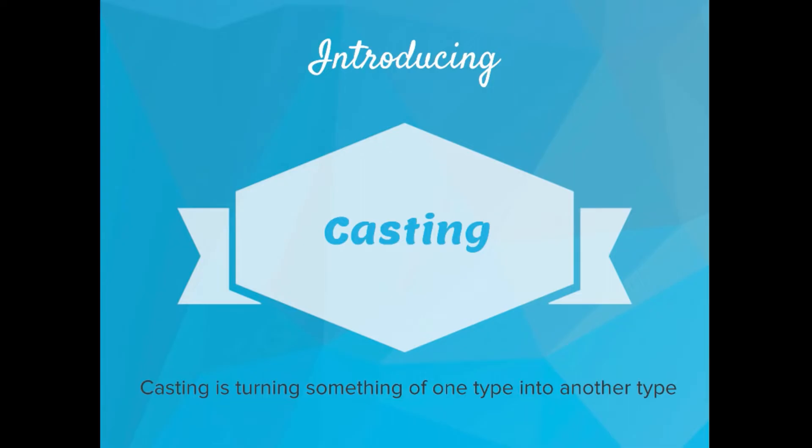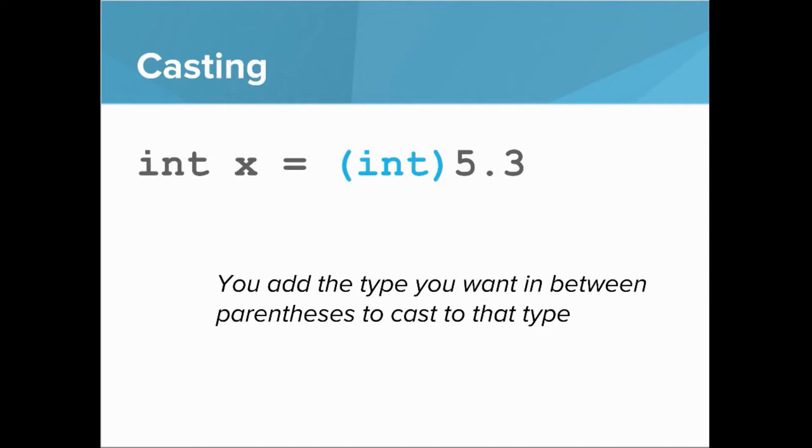Casting is turning something of one type into another type. For example, let's say we have the double 5.3 and we want to turn it into an int. To cast it as an int, we write open parentheses int close parentheses before the number and it'll turn it into the int 5. So you add the type you want in between parentheses to cast to that type.